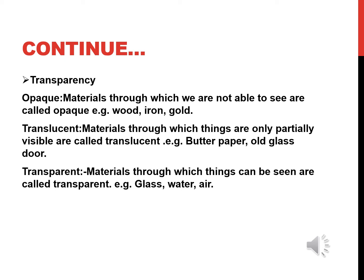Translucent substances are those through which we can see partially and light can pass through them partially — we see a blurred image and cannot see properly. Opaque substances are those through which no light can pass and one cannot see through them at all, such as wood, bricks, walls, etc.